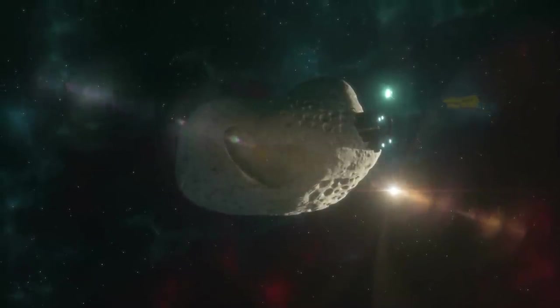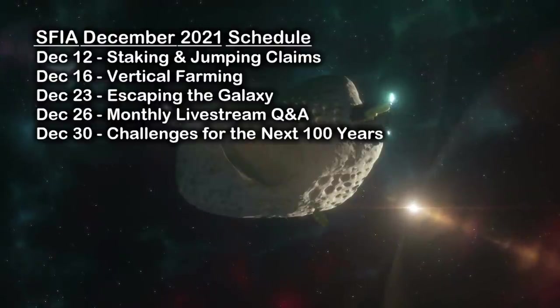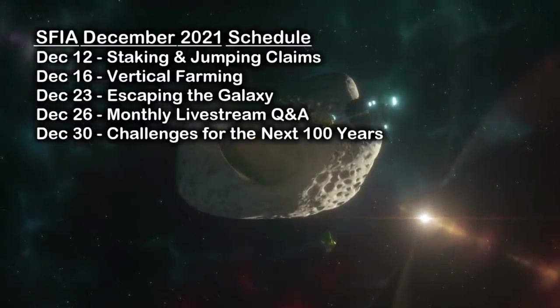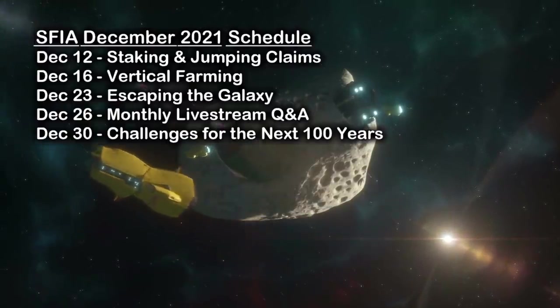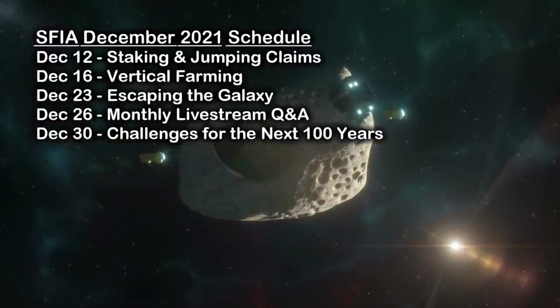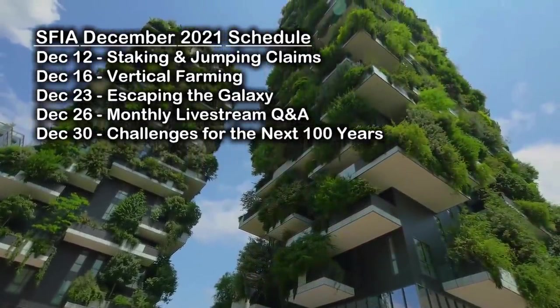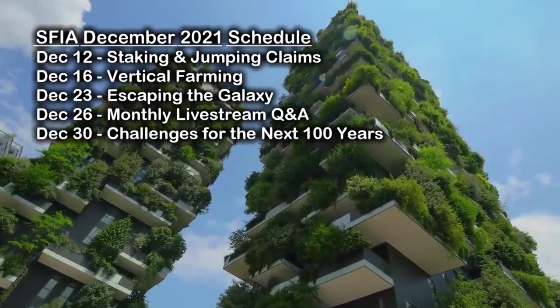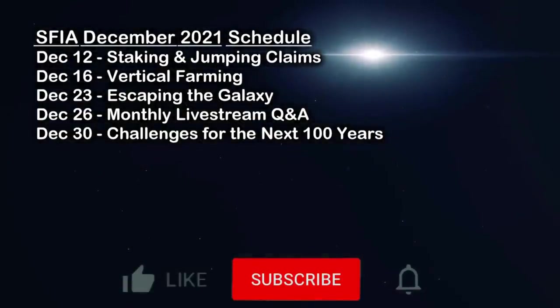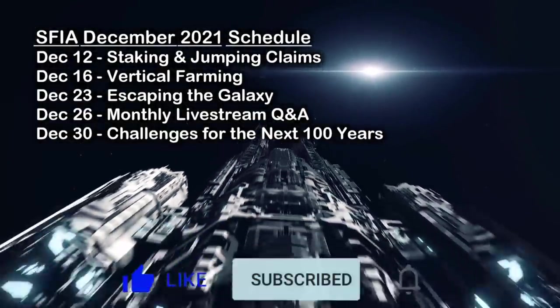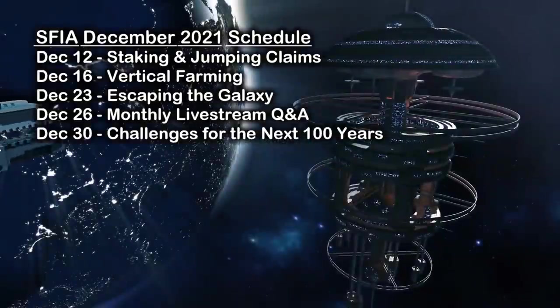So we're winding our way towards New Year's and only have three more Thursdays to go, but we also have our Sci-Fi Sunday episode this weekend, December 12th, to look at folks staking and jumping claims on asteroid mines and similar, and two weeks after that we'll have our end of the month livestream Q&A, on Sunday, December 26th at 4pm Eastern Time. But first, a week from now we will have a discussion of Vertical Farming, the technology that may let us nourish millions of people while keeping our planet pristine. Then we'll take a look at escaping the galaxy the week after that, if we need to get away from someone who has blown up our planet, before closing out the month and year with a look at the challenges we'll be facing in the next 100 years.